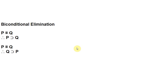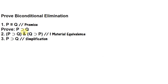The other rule, which goes the other way, is called biconditional elimination. That begins with the biconditional and lets you infer one of the two conditionals that the biconditional is equivalent to. So from 'p if and only if q' you may infer 'if p then q' or you may infer 'if q then p.' In the quick proof: from 'p if and only if q,' we use material equivalence to get 'if p then q and if q then p,' then use simplification to get one of the two conjuncts.